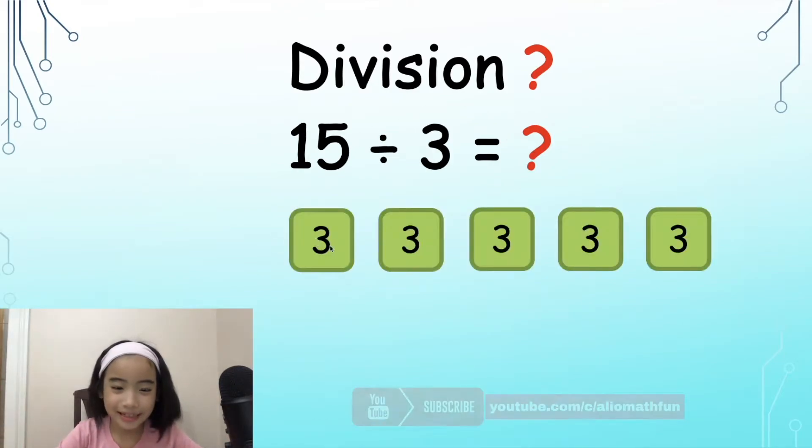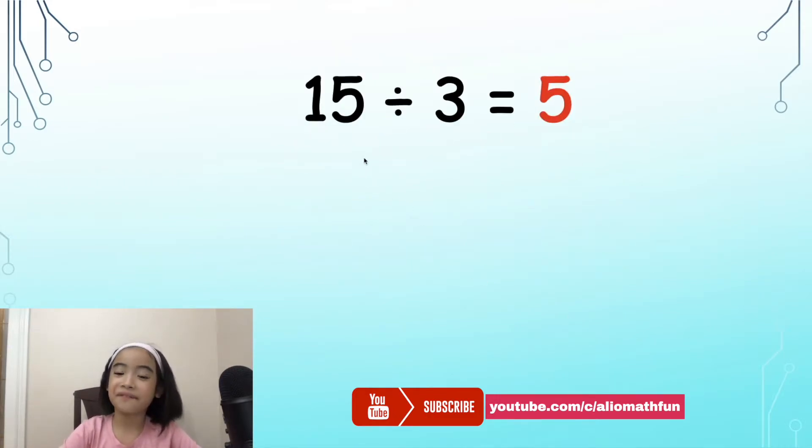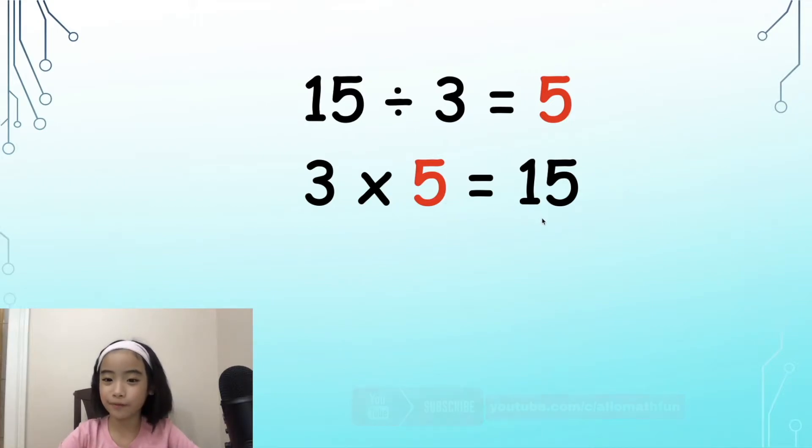So here is 1, 2, 3, 4, 5. 5 3's. So the answer is 5. We know that 15 divided by 3 equals 5, and 3 times 5 equals 15.